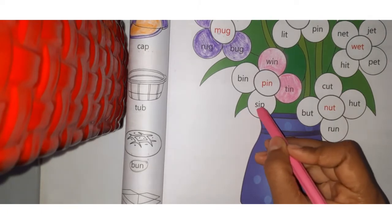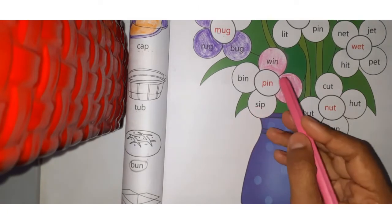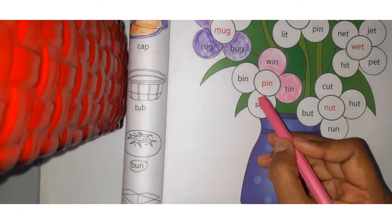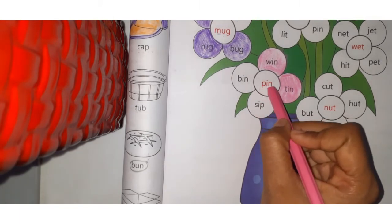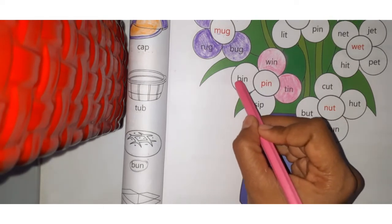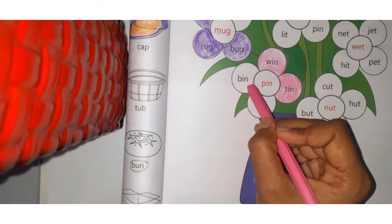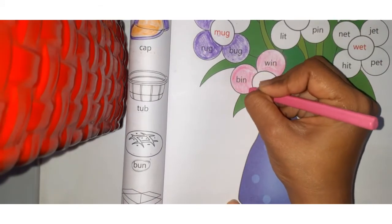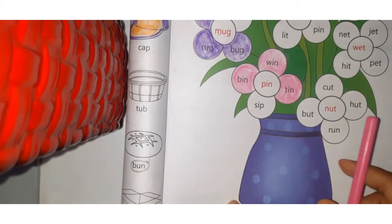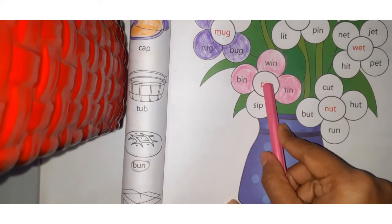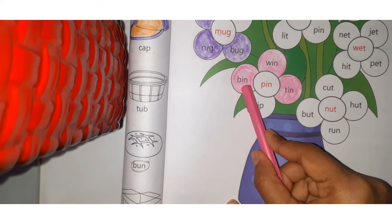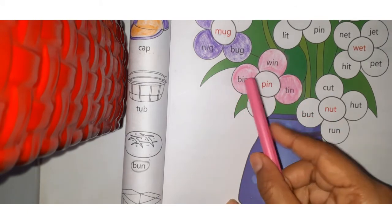Next: SIP, S-I-P, sip. Pin, sip - the sound is not similar, so this one is wrong. Pin, BIN, B-I-N, bin. Yes, pin, bin. They are rhyming words. Color it. Repeat after me: pin, win, tin, bin. All of these are rhyming words.